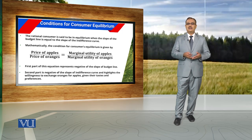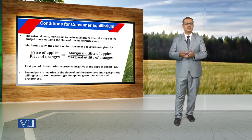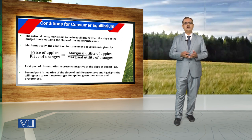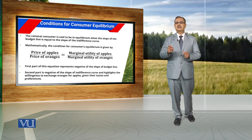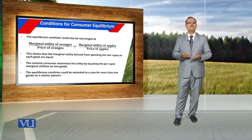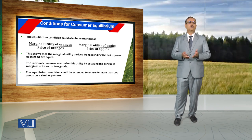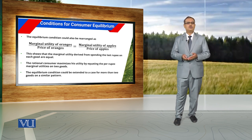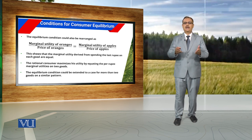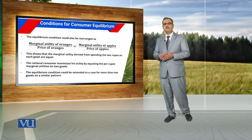The first part of this equation represents the negative of the slope of the budget line. If we multiply a negative number with the negative of the slope of the budget line, it becomes a positive number. Similarly, multiplying a negative with the negative of the slope of the indifference curve gives a positive number, which we express as the marginal utility of apples over the marginal utility of oranges. To maximize satisfaction, the consumer has to use that combination of commodities where the slope of the indifference curve equals the slope of the budget line. Rearranging this equation, we obtain an expression where marginal utility of oranges over price of oranges equals marginal utility of apples over price of apples.